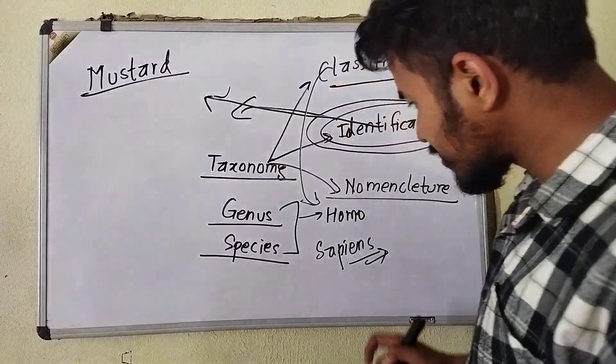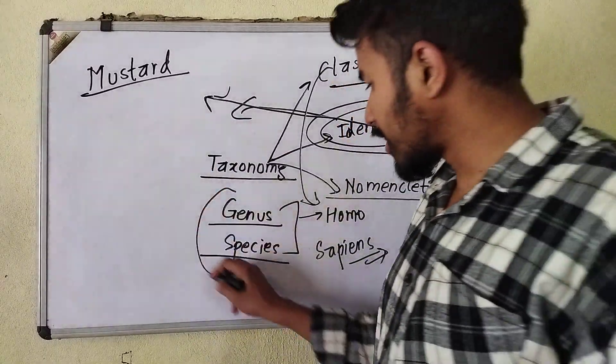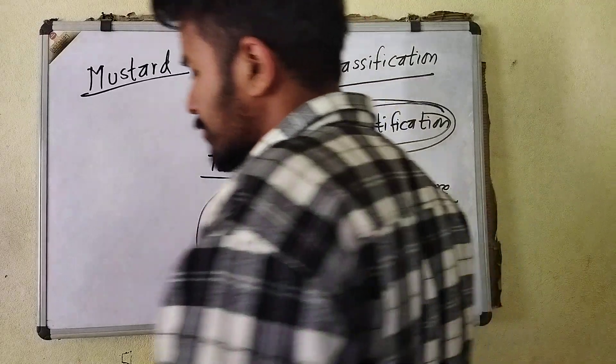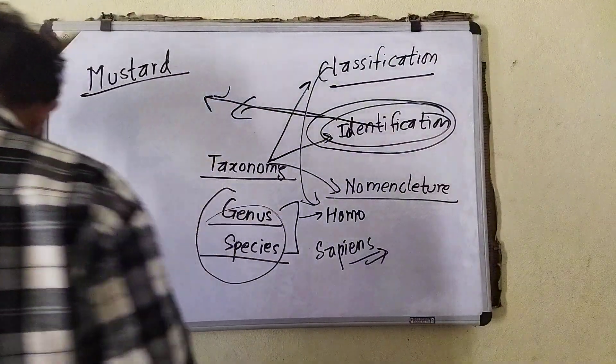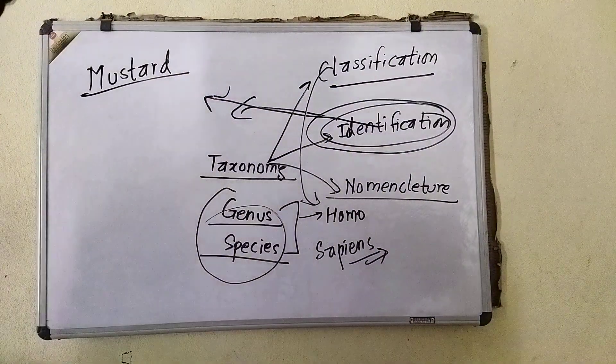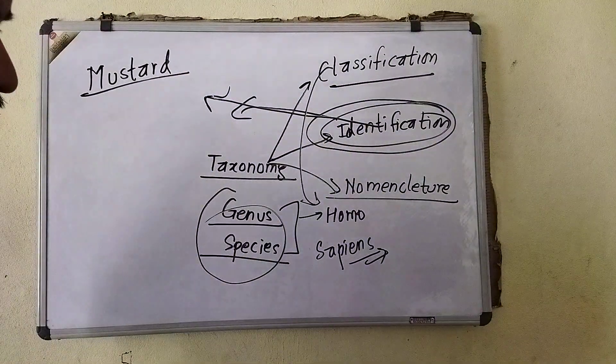We have these two terms: first one genus, next one species.